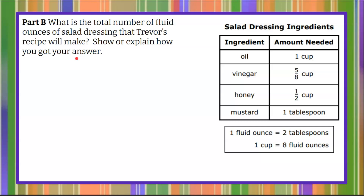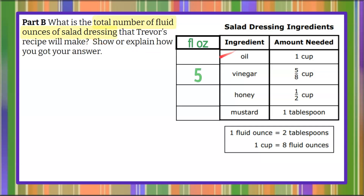Welcome back. Now we want to know the total number of fluid ounces of salad dressing. I'm going to add another column to my table, bringing forward that we already discovered five-eighths of a cup of vinegar is five fluid ounces. Now let's look at the oil — oil is one cup. We know that one cup is eight fluid ounces, so oil is equivalent to eight fluid ounces.